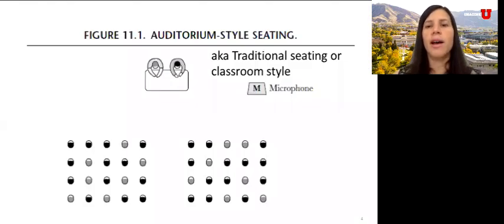Most public hearings are assembled in your traditional rows or also called classroom style, also called auditorium style seating. The traditional room or auditorium style setup typically consists of rows that are fixed and they cannot be moved. The public faces the decision maker with their backs to one another. This auditorium style seating arrangement is historically common, not only in city hall, but also in schools, in colleges, and universities.